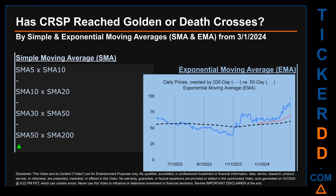Has CRSP price reached golden or death crosses? Golden cross and death cross are basic signals that compare average prices across two specified trade day ranges — a short-term versus a long-term range. For example, 5-day versus 10 trade days. Essentially, a golden cross is a bullish signal — it appears when a ticker's short-term moving average crosses above its long-term average. Vice versa, a death cross is a bearish signal when the short-term crosses below its long-term moving average.